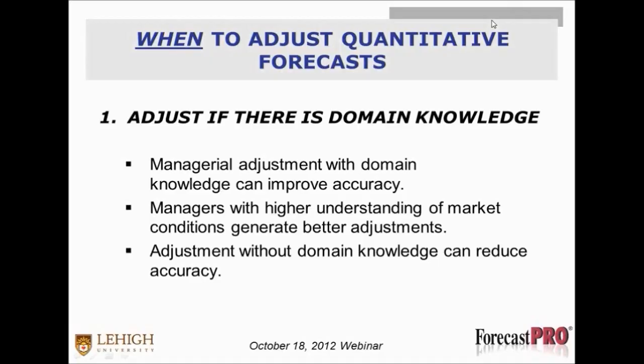Adjust in the presence of domain knowledge. Domain knowledge is experience that managers gain just from being on the job — whether it's five, ten, or twenty years. Managers who have worked in a particular industry have insights that someone brand new simply doesn't know. We've found that managerial adjustments with domain knowledge can actually improve accuracy. Managers with higher understanding of market conditions generate better adjustments. Studies have also found that adjustments without domain knowledge can reduce accuracy. So we want to make sure there is some experience, that managers know the industry a little bit.